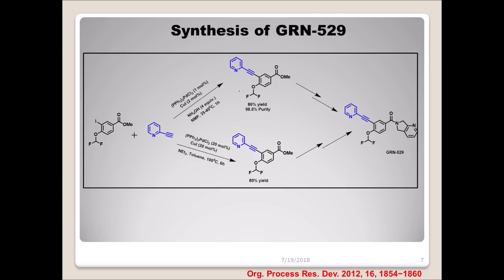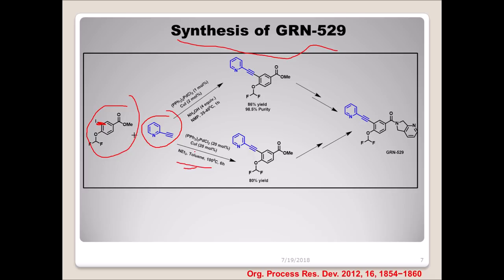Another example is the synthesis of GRN-529, which utilizes Sonogashira reaction, but one route was more efficient than the other. The less efficient route uses aryl iodide with an alkyne derivative of pyridine, using 20 mol% palladium catalyst, copper catalyst, triethylamine, toluene as solvent (which is carcinogenic), at 100°C for six hours. After optimization, only 1 mol% palladium and 2 mol% copper are needed.